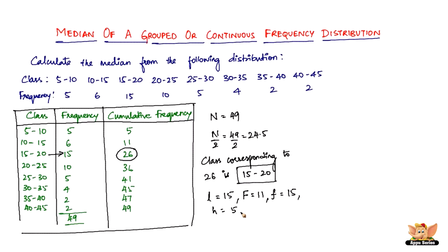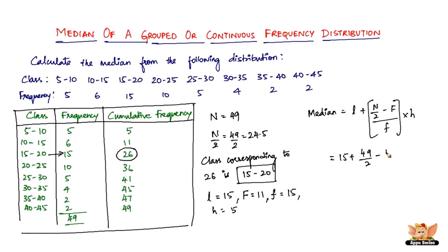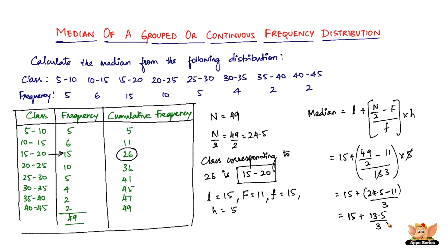And H equals 5, which is the class size — 20 minus 15. Now the formula for median is: Median = L + (N/2 − F) / f × H. Substituting the values: 15 + (49/2 − 11) / 15 × 5. Since 5/15 simplifies to 1/3: 15 + (24.5 − 11) / 3 = 15 + 13.5 / 3 = 15 + 4.5 = 19.5. So the median of this continuous frequency distribution is 19.5.